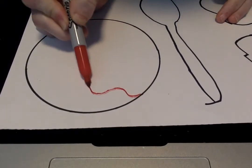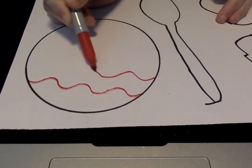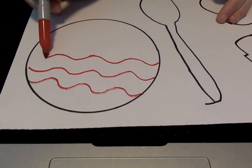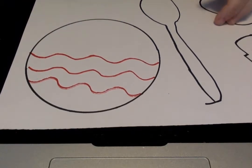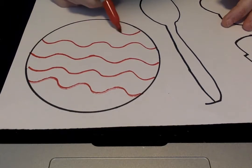Maybe I'll do a wavy line inside this one. So in this circle I'm just going to practice my wavy lines. And you can do all this first with pencil and then you can go over it with crayon.